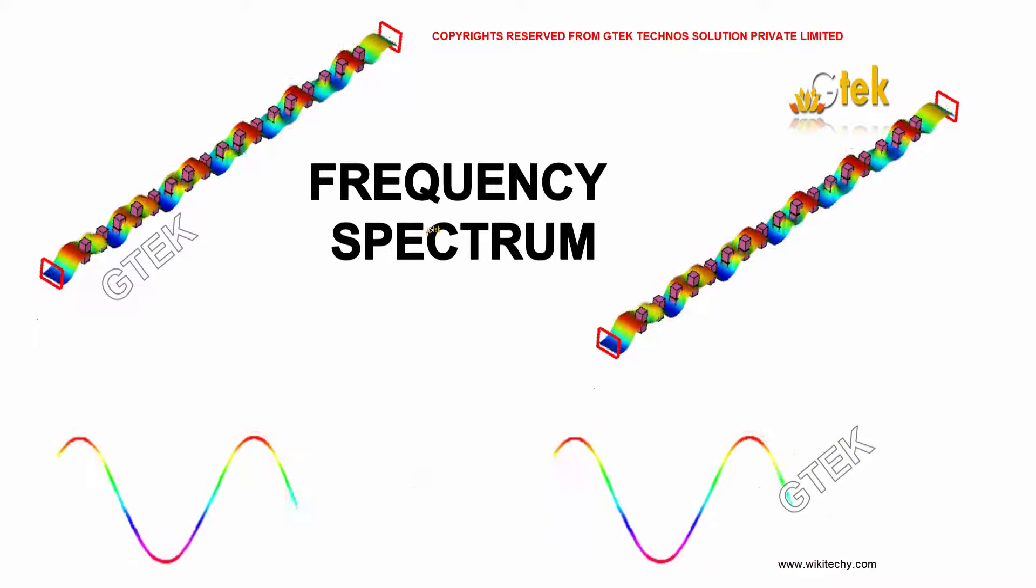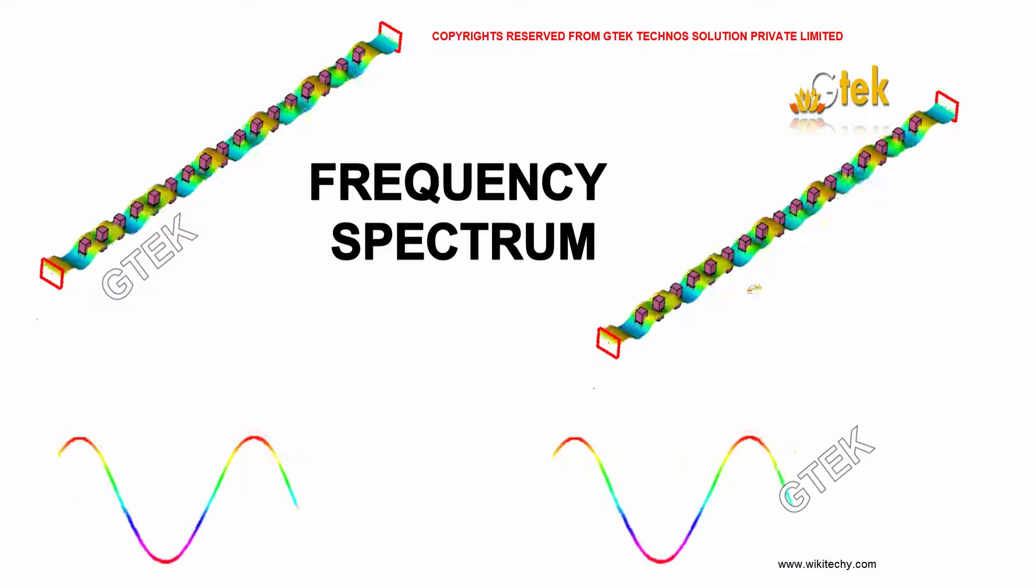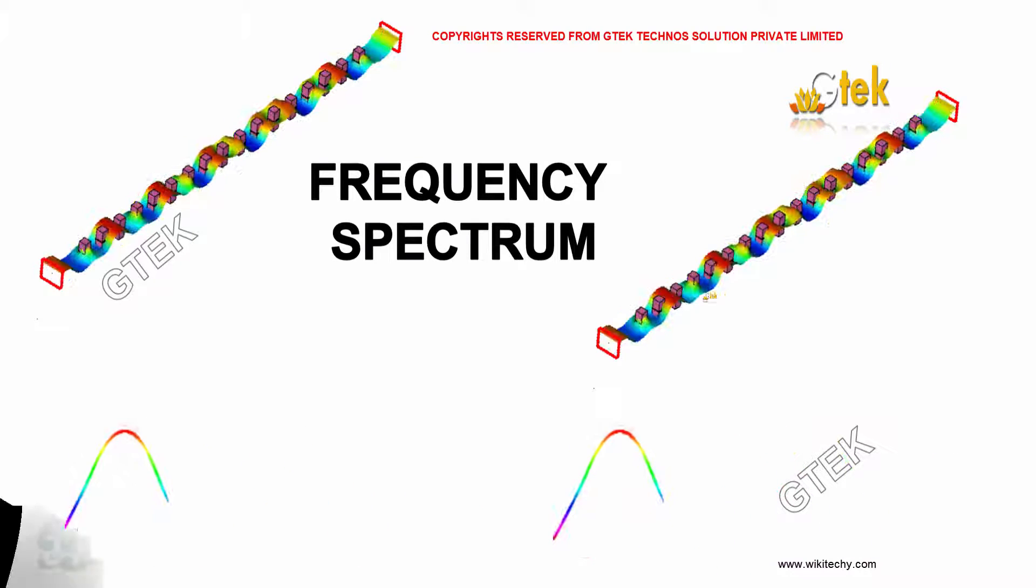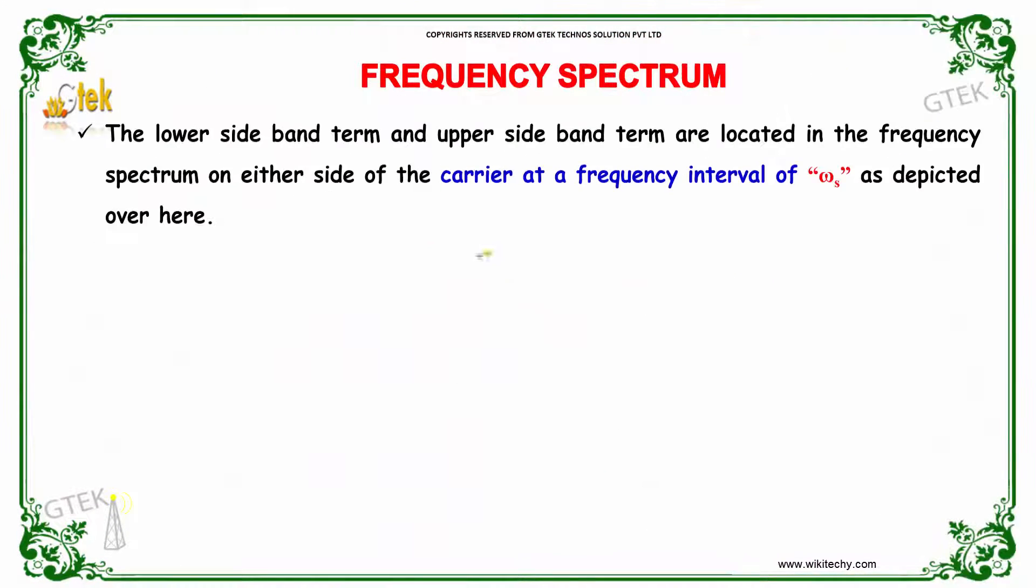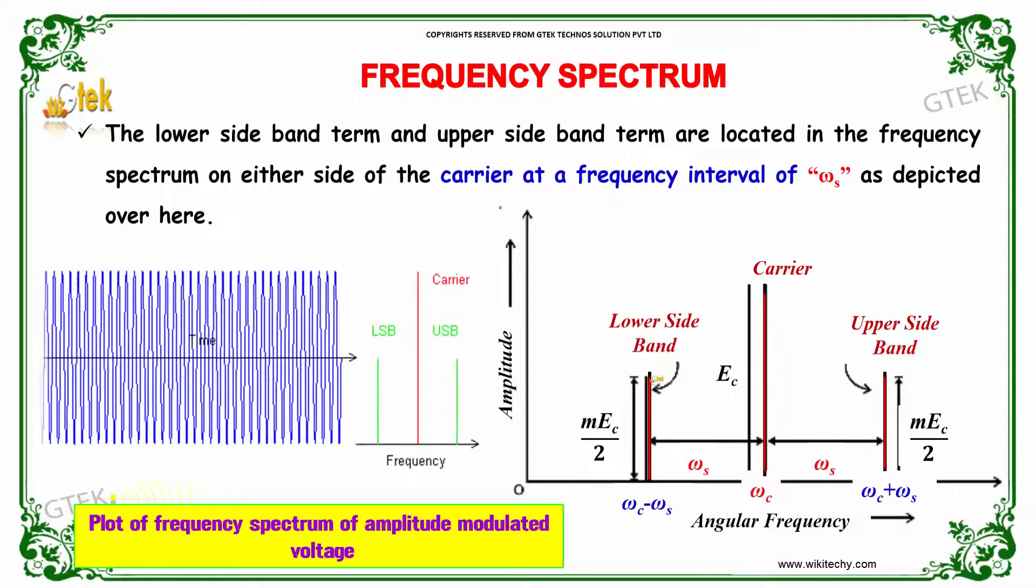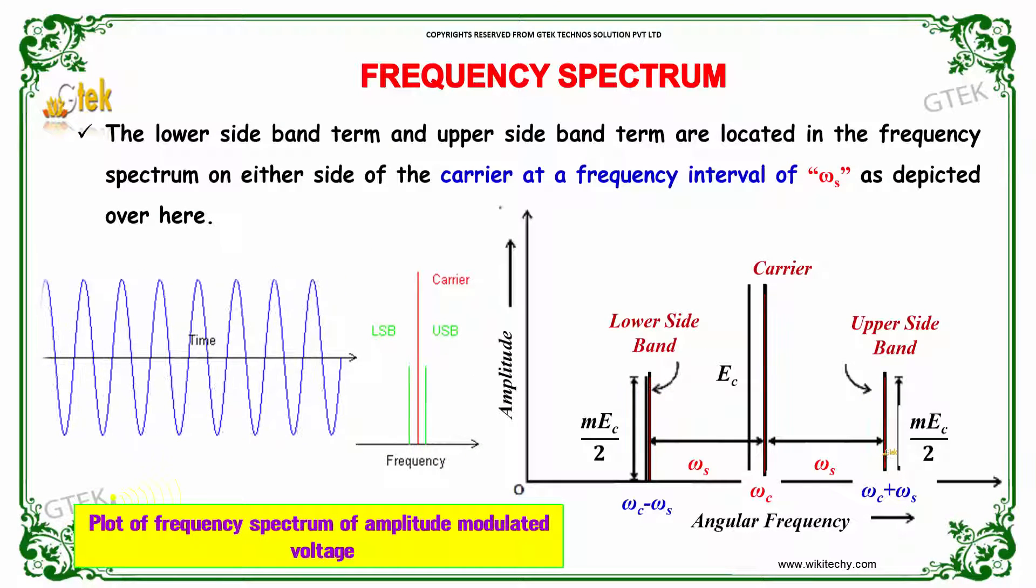Frequency spectrum. Let's see what the frequency spectrum is and its details. The lower sideband term and upper sideband term are located in the frequency spectrum. This is called the frequency spectrum.